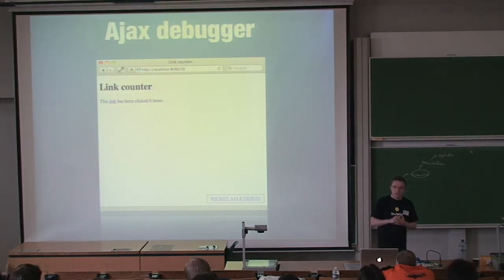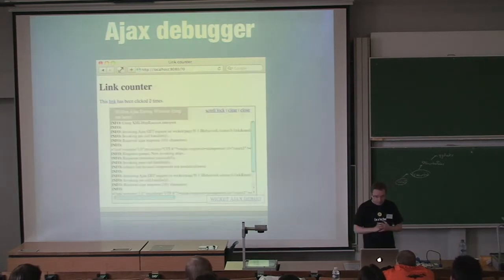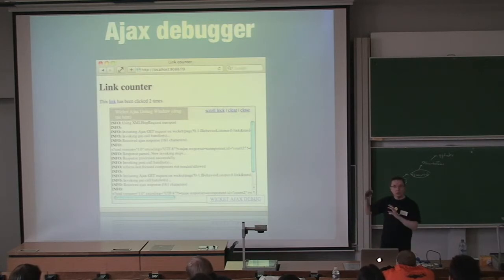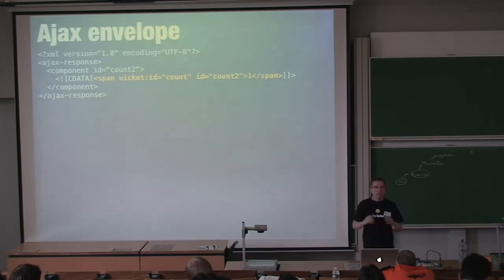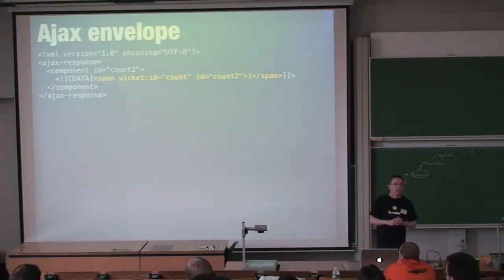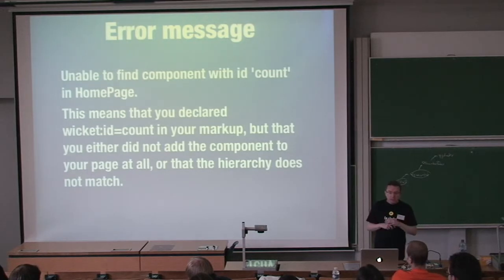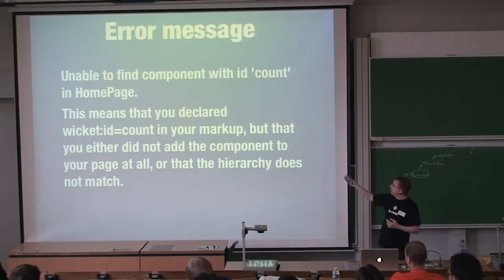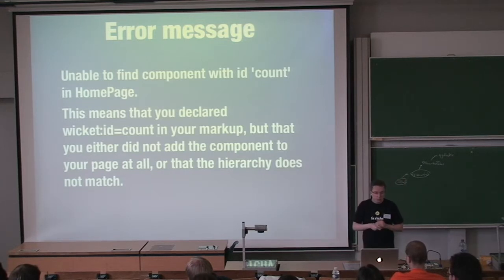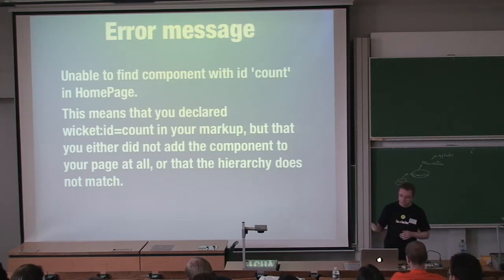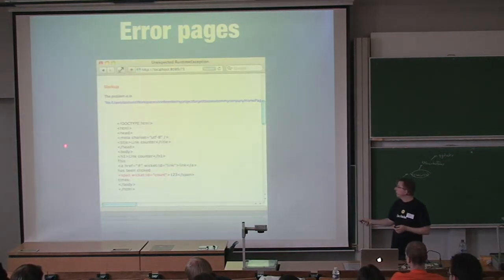A quick look at the AJAX debug window. If you have the link counter page, at the bottom you see a link for our debugger. Click on it and you get a nice small window showing everything that happens with AJAX in Wicket — for example, which components have been transmitted using AJAX and the markup. Our error messages are also very nice: for instance, 'unable to find a component with ID count in your homepage' — this means you declared the component in your markup but did not add it to your page, or the hierarchy does not match. We tell you even where in the markup the offending element is.